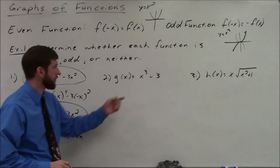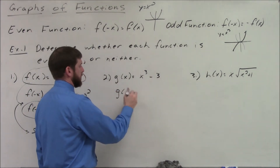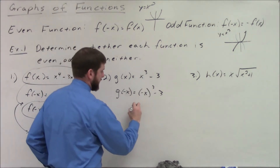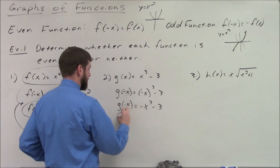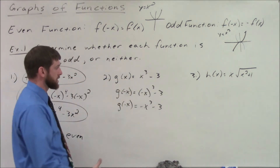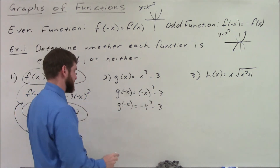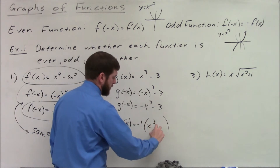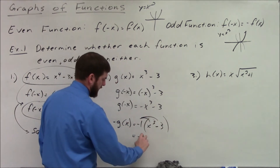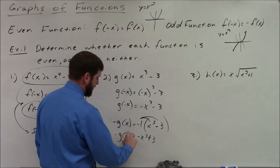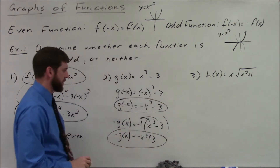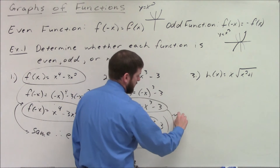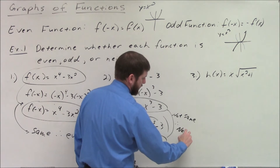For the second example, plugging in negative x with odd powers — a negative raised to an odd power stays negative — gives g(−x) = −x³ − 3. That's not equal to g(x). Testing for oddness: negative g(x) = −(x³ − 3) = −x³ + 3. But g(−x) has minus 3 while −g(x) has plus 3, so they're not equivalent. Therefore the function is neither even nor odd.